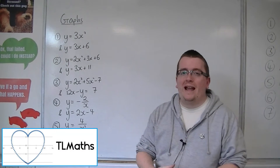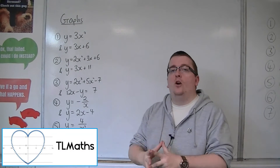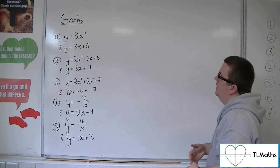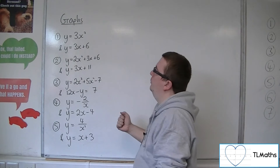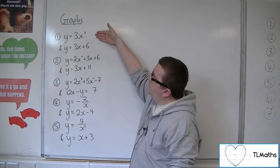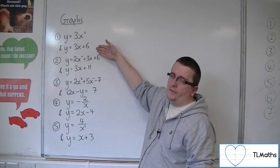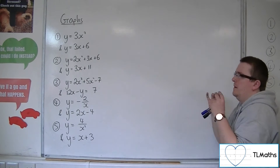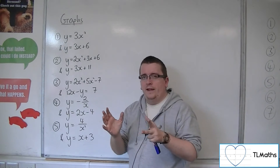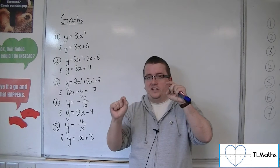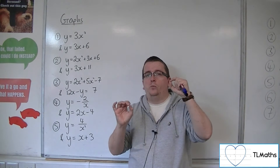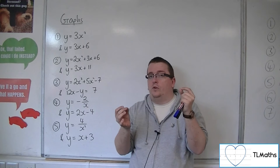In this video, we're going to be looking at finding where a curve and a straight line intersect. In each of these five examples I'm going to work through, we have a curve and a line. Where a curve and a line intersect, at those intersection points, the y-coordinates will be the same, as will the x-coordinates.